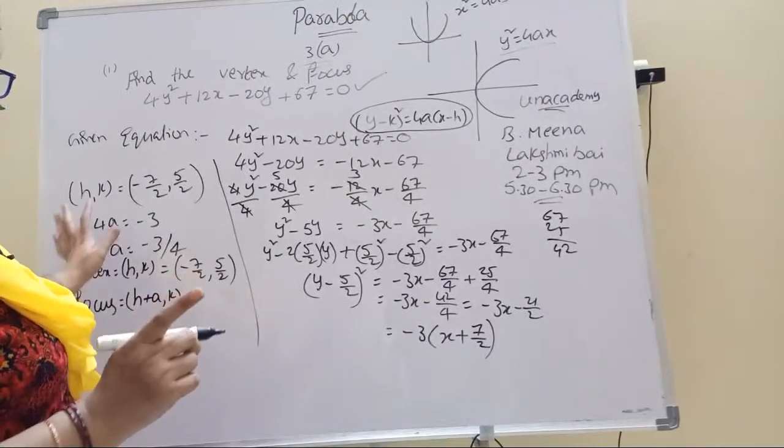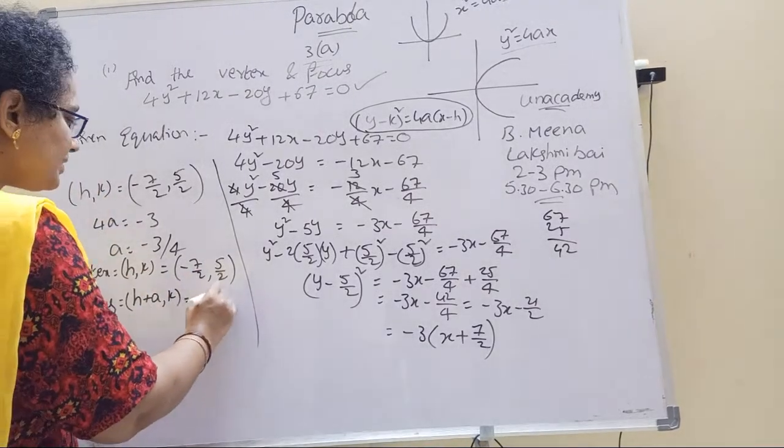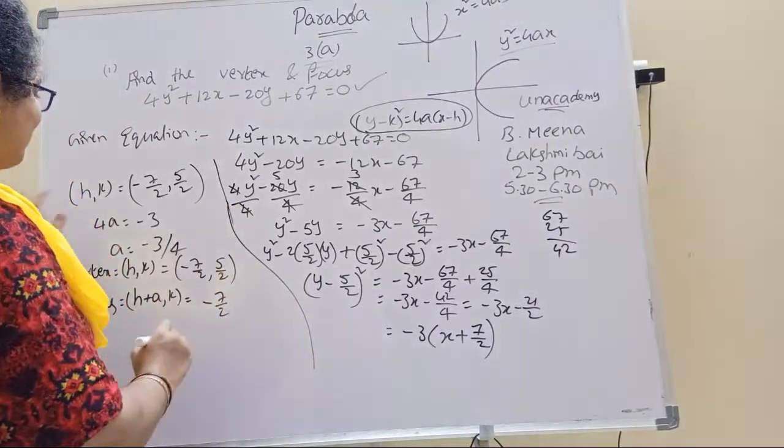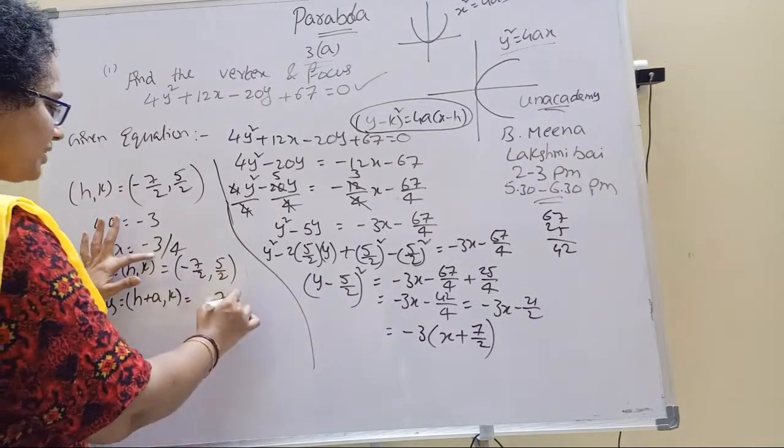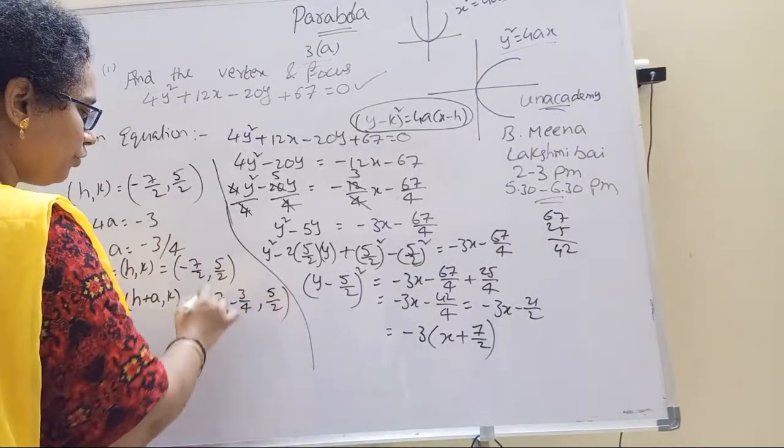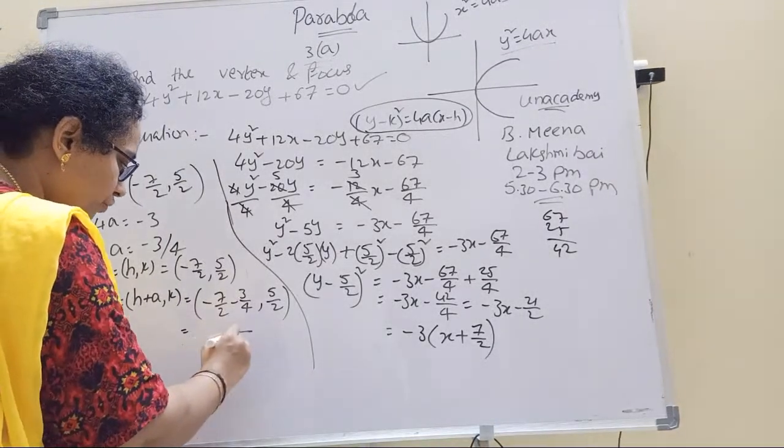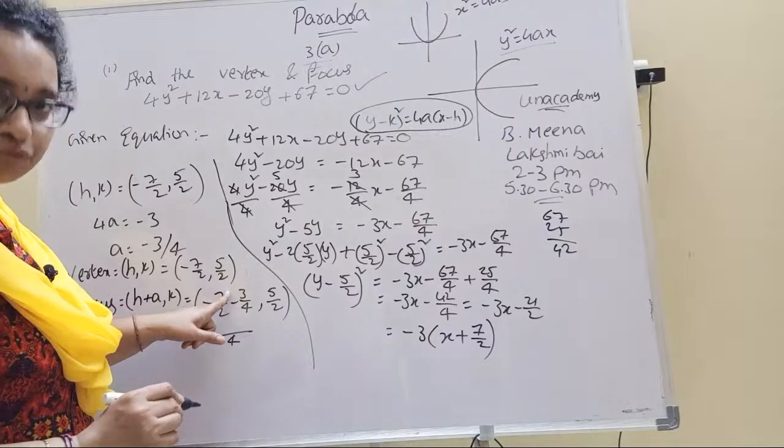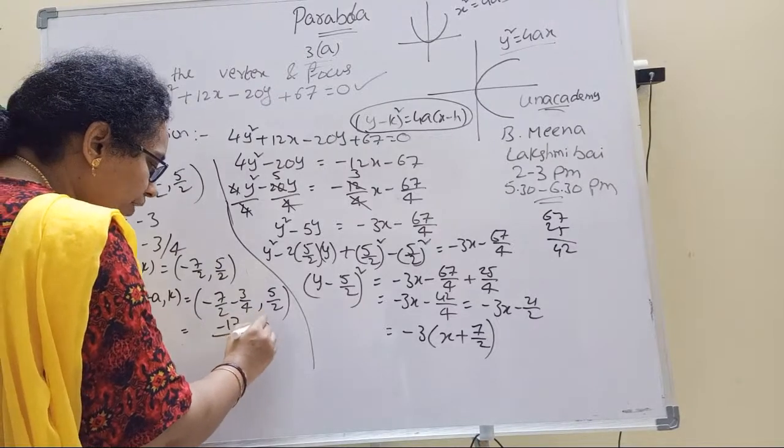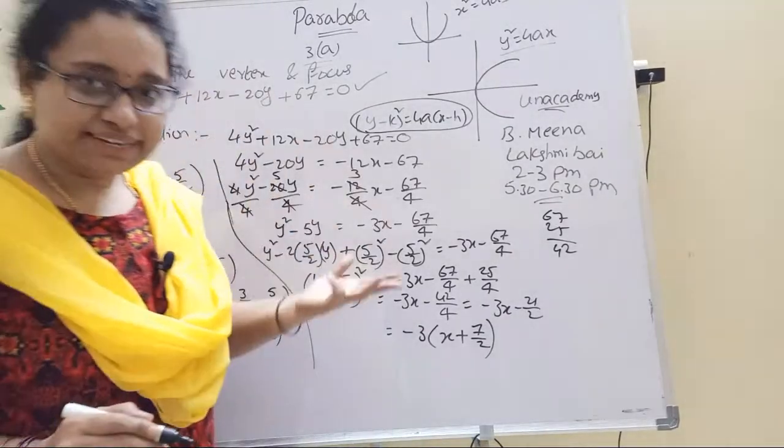h plus a. h is minus 7 by 2 plus a which is minus 3 by 4, comma k which is 5 by 2. Simplification: LCM is 4. 2 times 7 is 14. Minus 14 minus 3 equals minus 17. So focus is minus 17 by 4, 5 by 2.